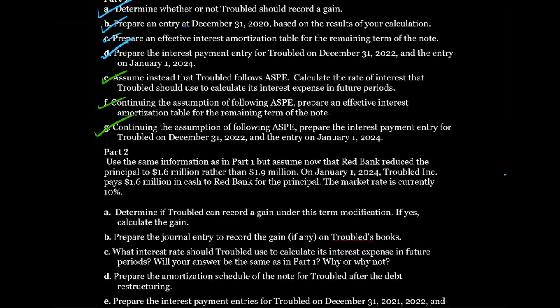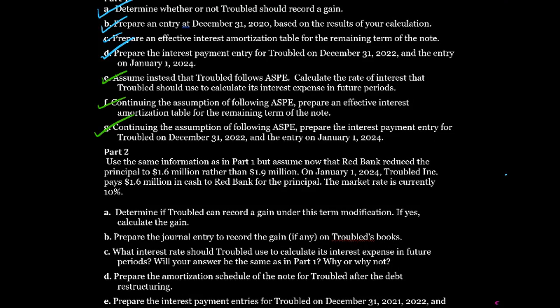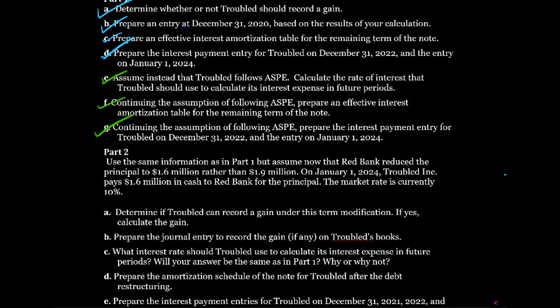Using the same information as part one, now assume that Red Bank reduced the principal to $1.6 million rather than $1.9 million. On January 1st, 2024, Troubled Inc. pays $1.6 million in cash to Red Bank for the principal. The market rate is currently 10%. We need to use the cash flow test to figure out if the present value of the cash flow streams of the new debt are more than 10% different from the cash flow streams of the old debt.